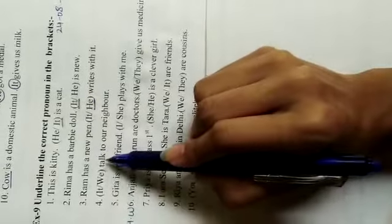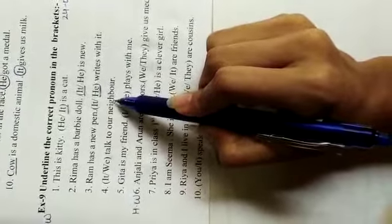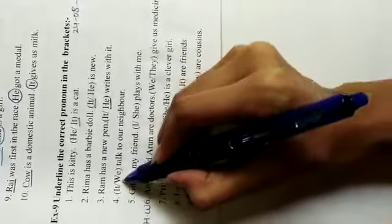Number 4. It or we talk to our neighbor. Here we are talking about more than one person. For more than one person, which pronoun we use? We use we. Underline we.